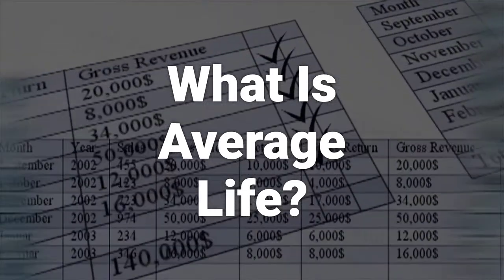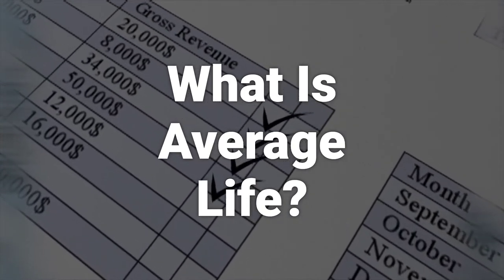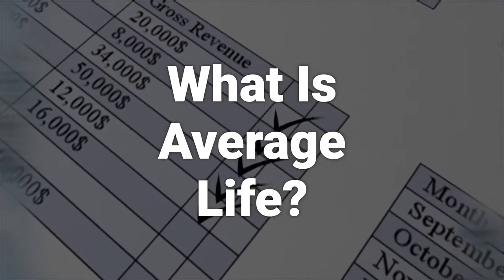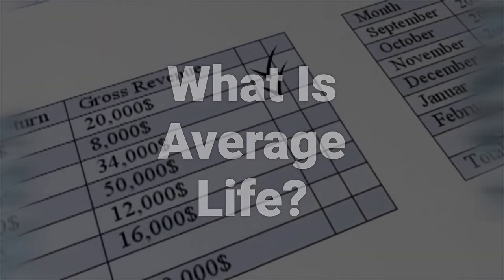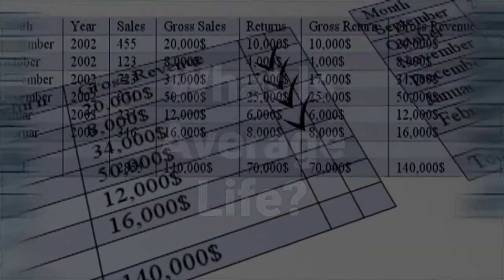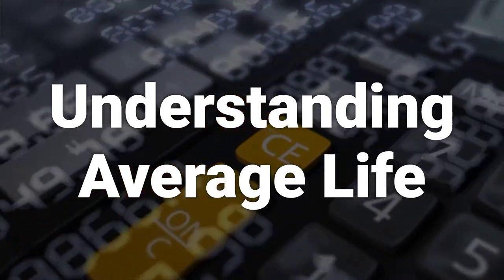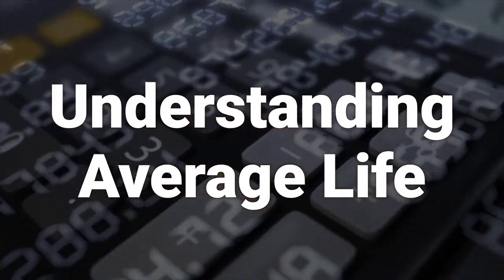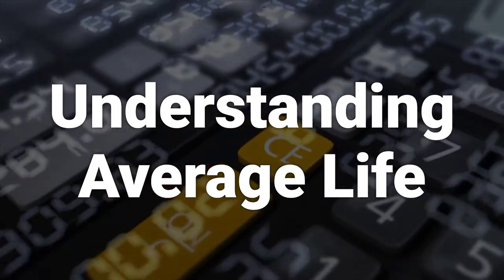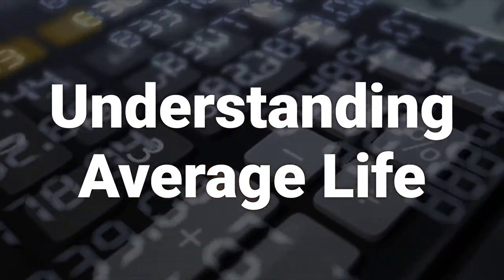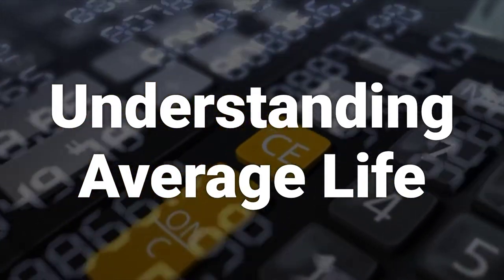For example, in loans, mortgages, and bonds, the average life is the average period of time before the debt is repaid through amortization or sinking fund payments. Also called the weighted average maturity or weighted average life, the average life is calculated to determine how long it will take to pay the outstanding principal of a debt issue, such as a treasury bill or bond.